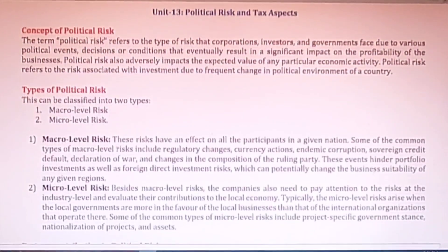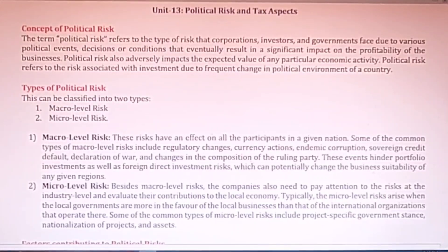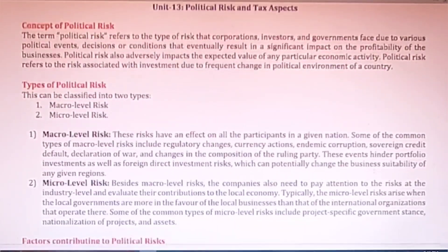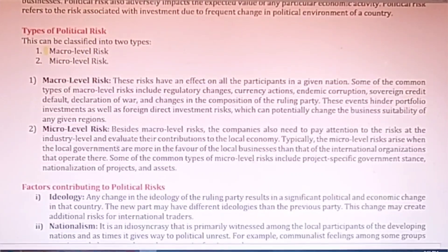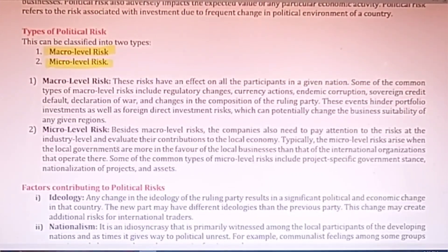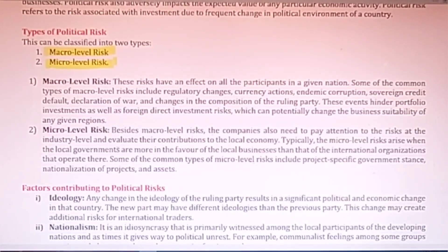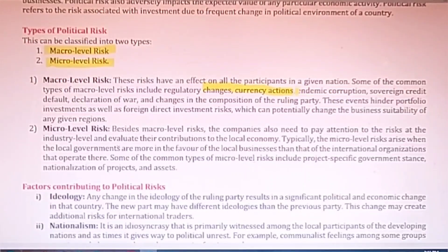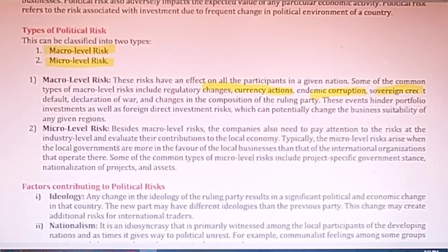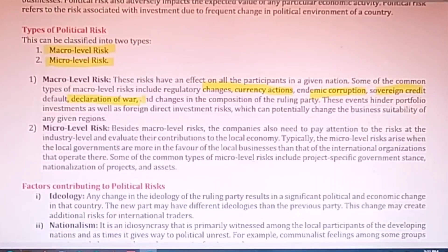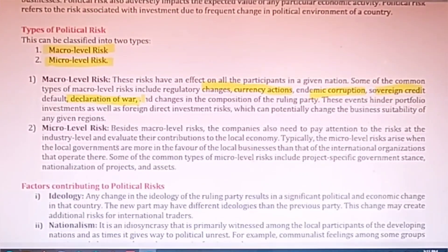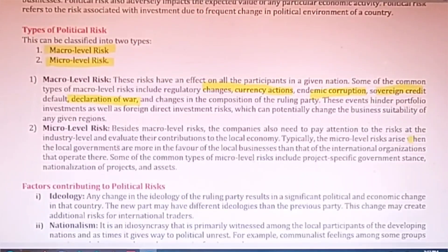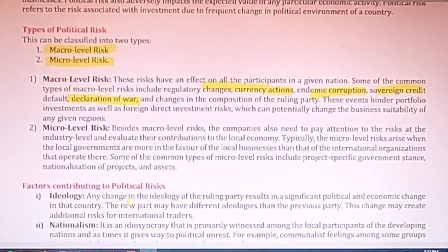The next topic is political risk. Different countries have different political systems and there are chances of risk even. There are two broad categories of political risk — macro and micro. Macro risk includes big types of risk like changes in currency, corruption, sovereign credit default, and declaration of war. Micro risk includes small-scale fraudulent activities, local government policy changes, and similar issues.